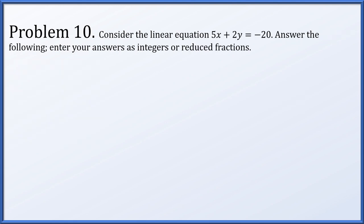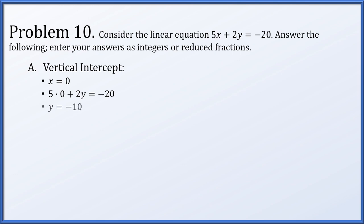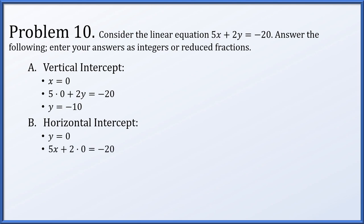For problem ten, given 5x plus 2y equals negative 20, we answer a series of questions. First, the vertical intercept: let x equal 0, giving 2y equals negative 20, so y equals negative 10. Next, the horizontal intercept: let y equal 0, giving 5x equals negative 20, so x equals negative 4.